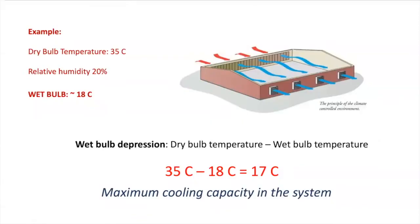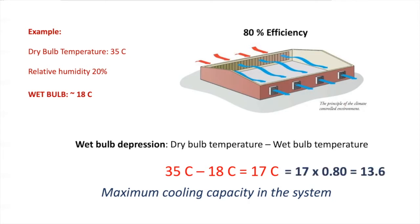Now let's use the wet bulb depression formula: 35 degrees Celsius minus 18 degrees Celsius equals 17 degrees Celsius, meaning 17 degrees can be removed from the greenhouse in a perfect scenario. But not everything is perfect, so we need to be more realistic and assume a cooling system with exhaust fans and wet walls will have an efficiency of 80%. To get a more realistic number, I will calculate 80% of 17. So now this is the maximum cooling capacity of the system.